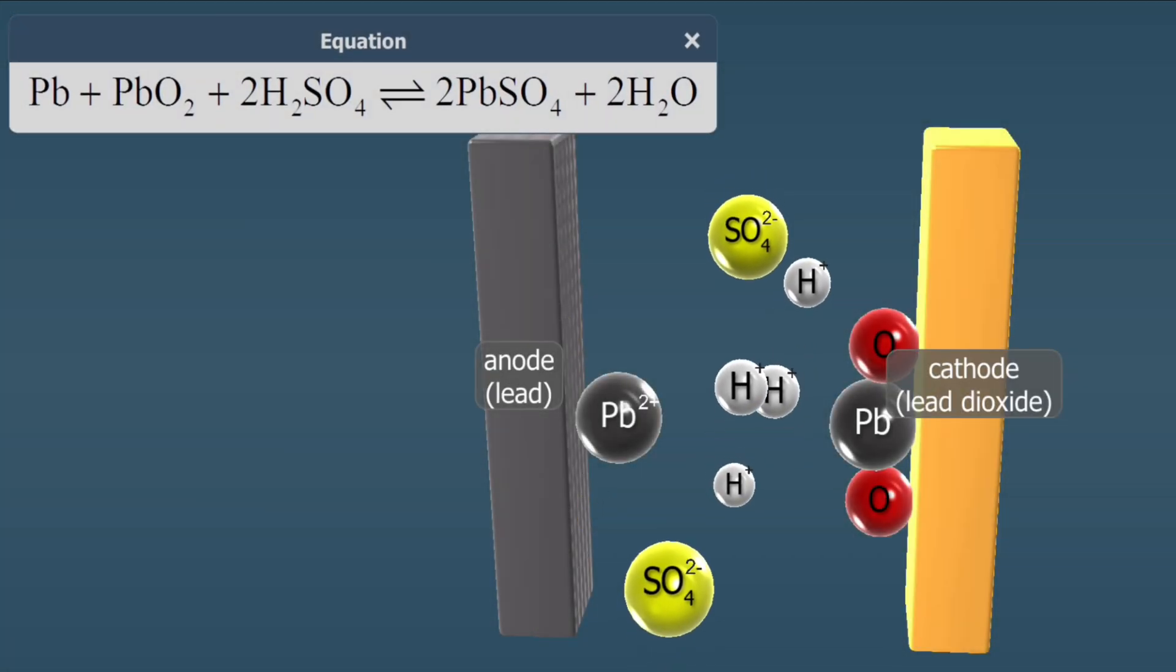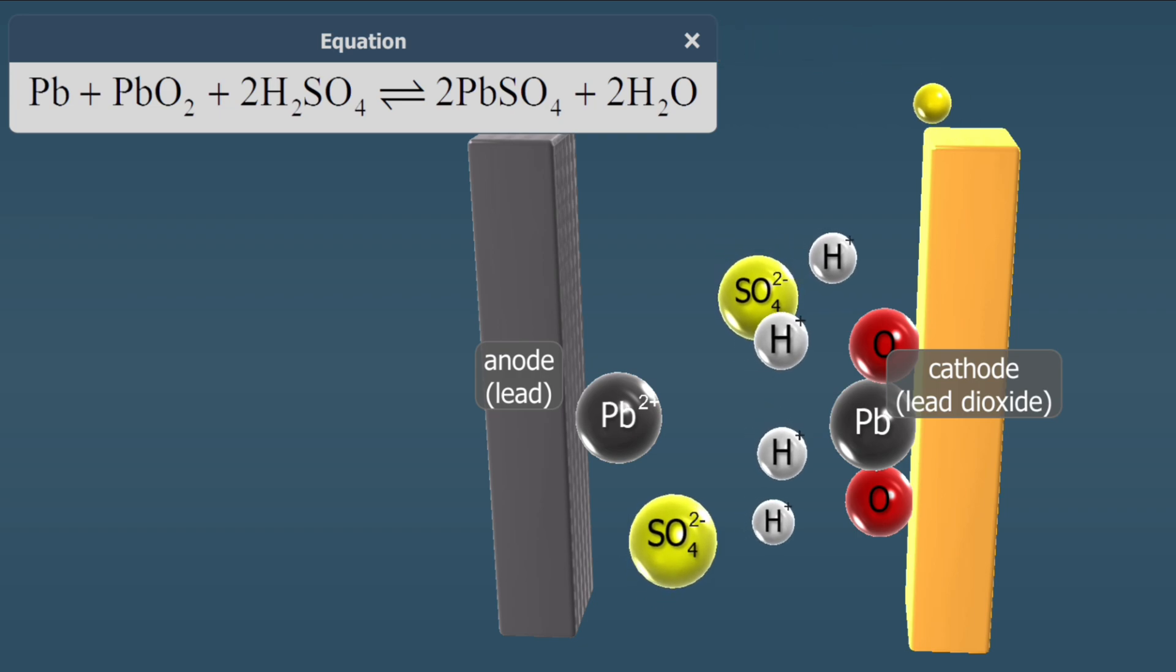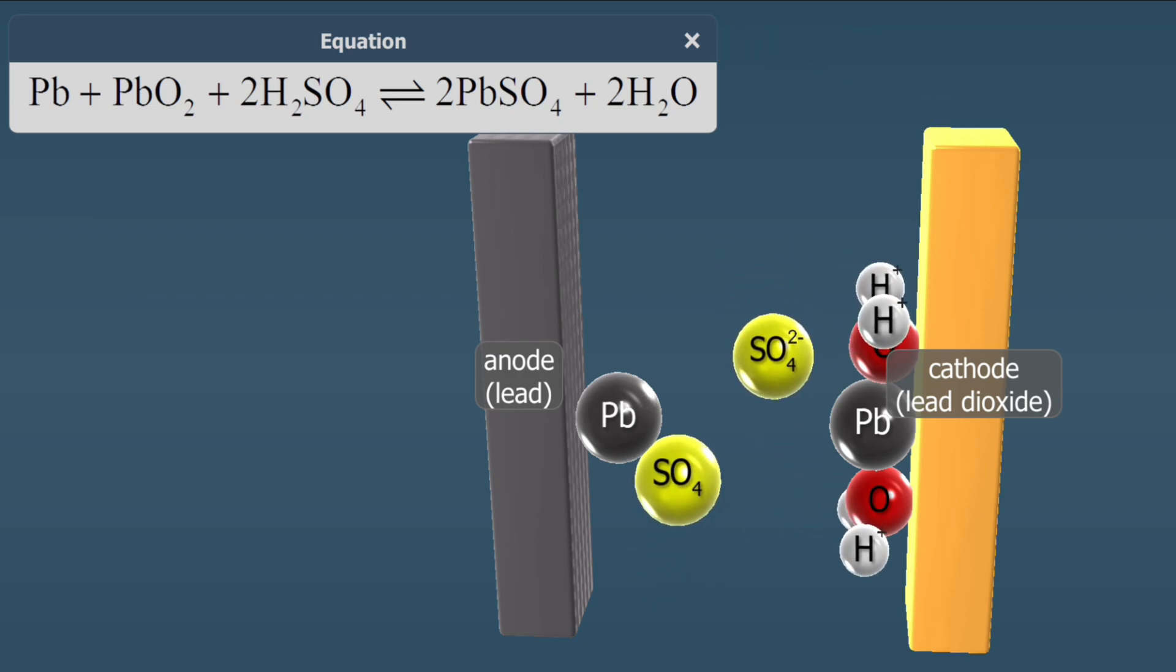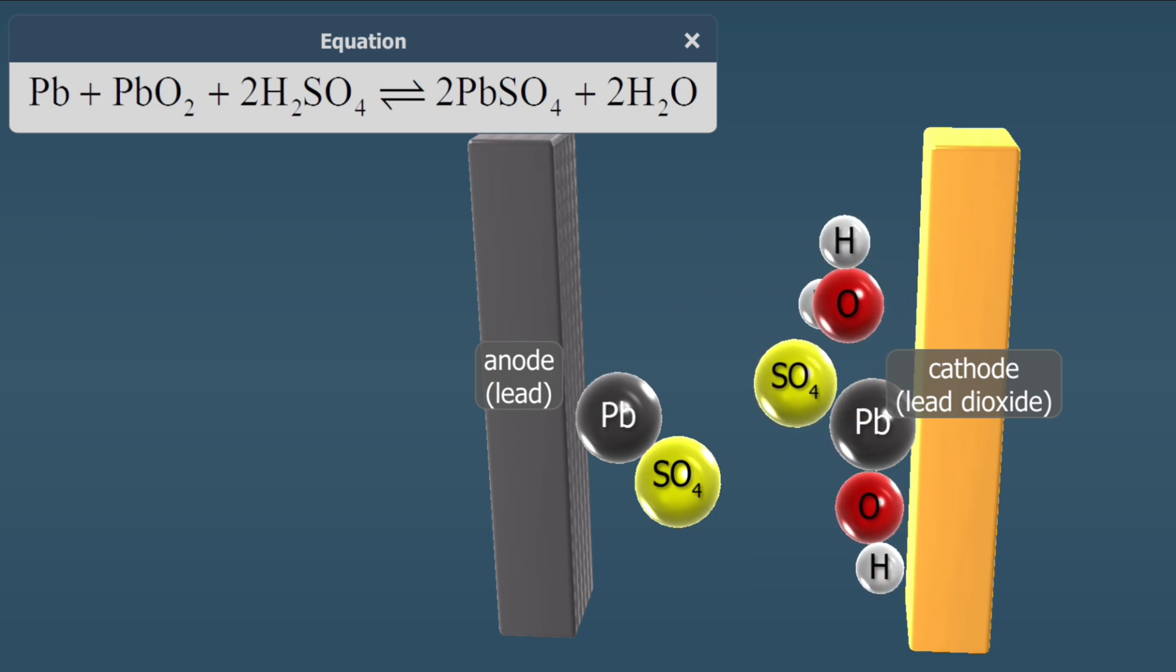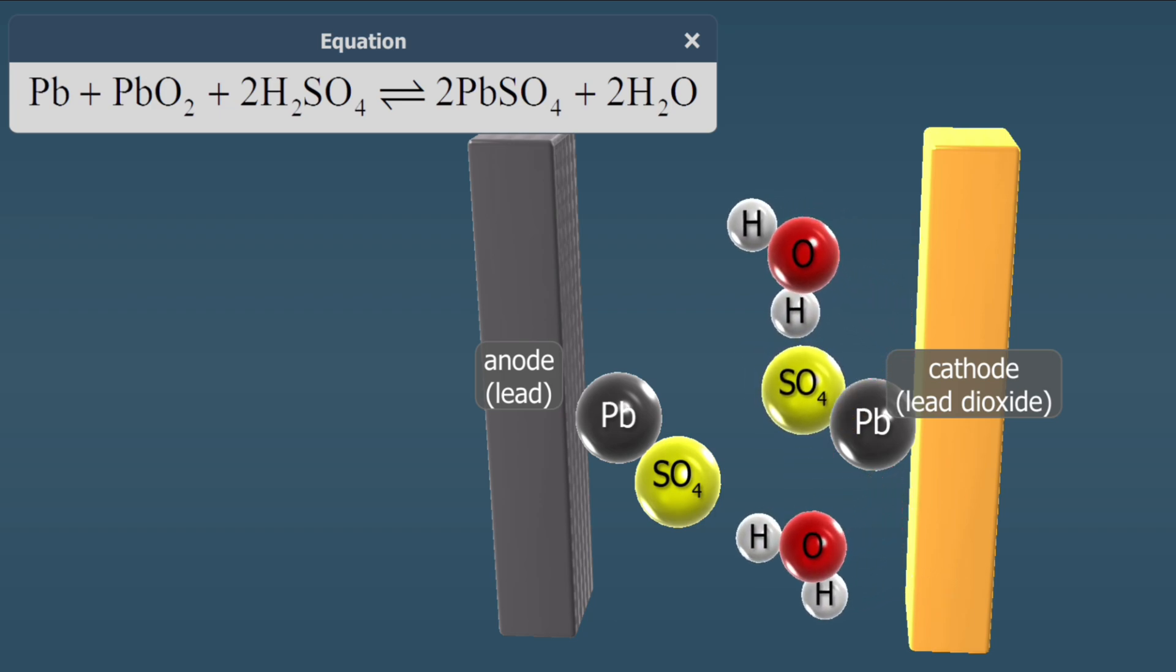When the battery discharges, both lead and lead-dioxide react with sulfuric acid to produce lead sulfate. As more water is produced during this reaction, the sulfuric acid solution becomes diluted. This process is reversed when the battery is charged.